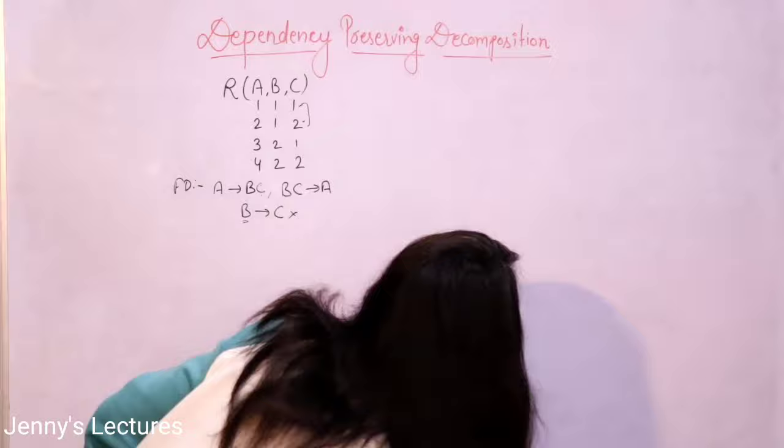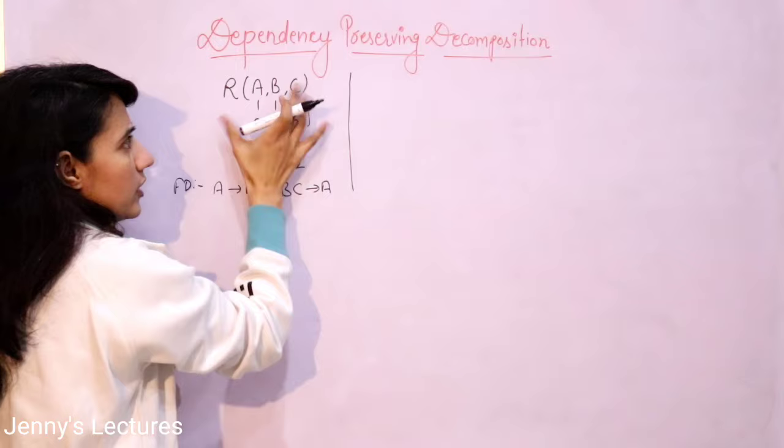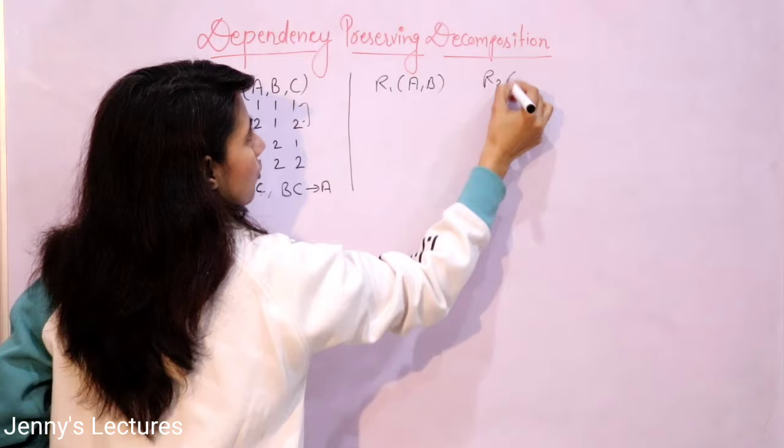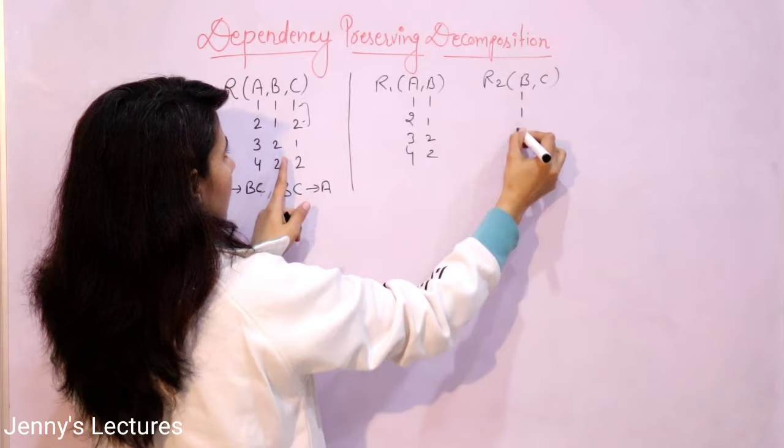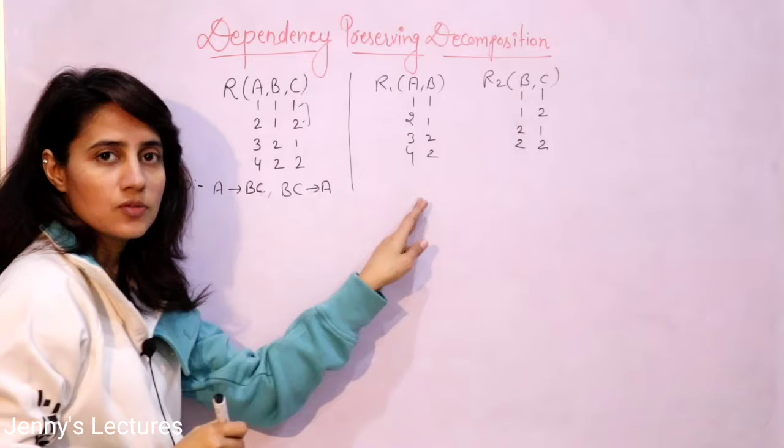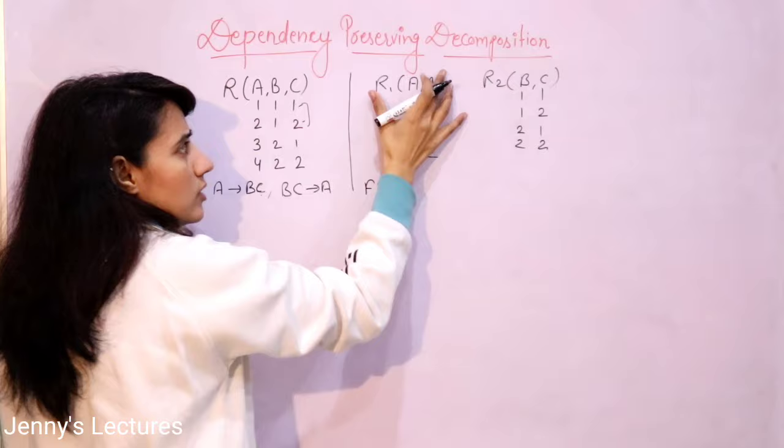Now suppose I have decomposed this relation into two sub-relations: R1 having A, B and R2 having B, C. The values would be correspondingly split. Find out the functional dependency set for each sub-relation. I'm taking the FD set of the original relation as F, and for the sub-relations as F1 and F2 respectively.